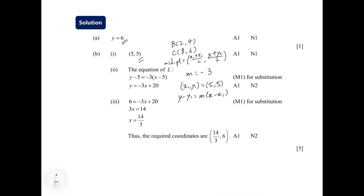We have y minus 5 equals negative 3 times (x minus 5). Expanding the right-hand side gives y minus 5 equals negative 3x plus 15. Moving negative 5 from the left to the right, it becomes plus 5, giving us y equals negative 3x plus 20. This is in the format y = mx + c, and this is the equation of L.